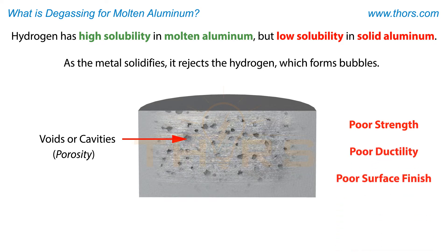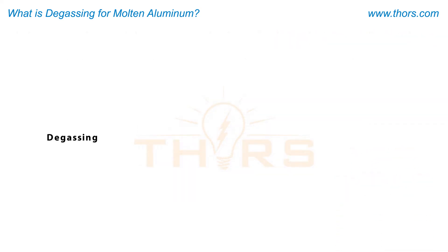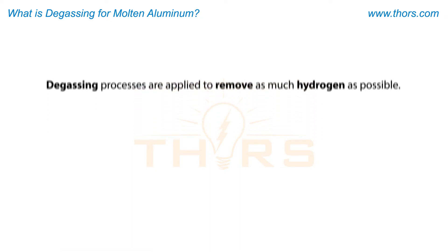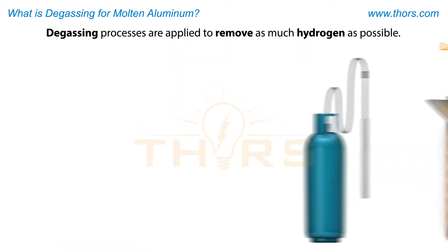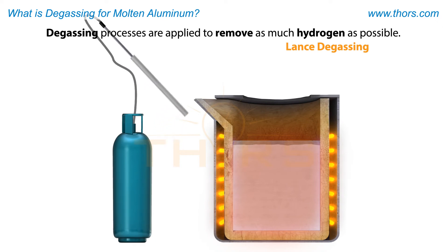Porosity results in castings with poor strength, ductility, and surface finish. Degassing processes are applied to remove as much hydrogen as possible.